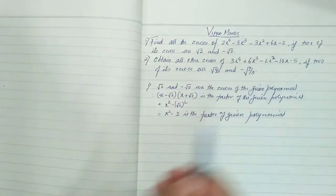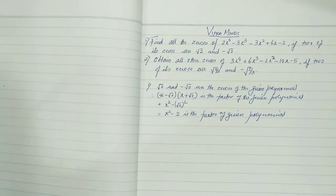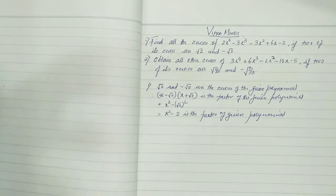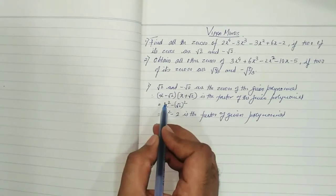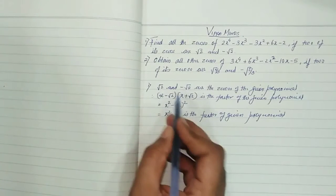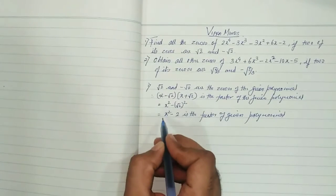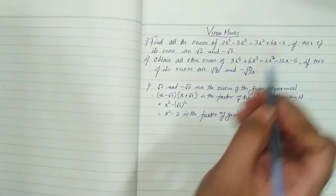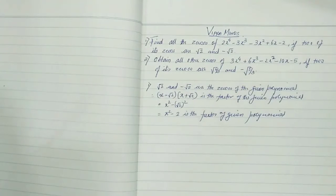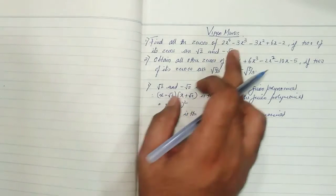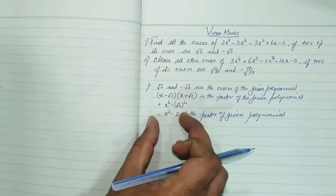Now if I factorize the biquadratic polynomial, I will find 4 factors. Since x² - 2 is one quadratic factor giving us 2 of the zeros, we need to find the other quadratic factor, which will give us the remaining 2 zeros. By the factor theorem, if x² - 2 is a factor, then when we divide the polynomial by it, the remainder will be 0, and the quotient will be the other factor.